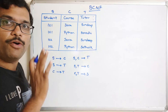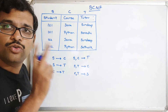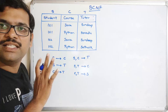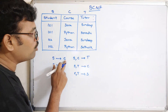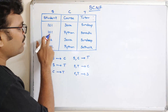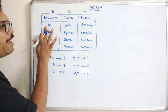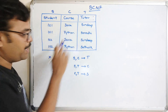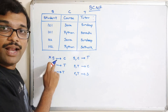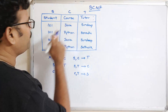According to the definition of functional dependency, consider two random tuples — if there is a common X value, the corresponding Y values should also be the same. For S→C: student 101 gives both Java and Python, so X is same but Y is different — this is not a valid functional dependency. Similarly, S→T is also not valid, as student 101 maps to both Sandeep and Sarvi.